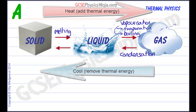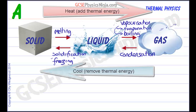We are back to a liquid. And if you continue cooling a liquid, we eventually solidify it — solidification, otherwise known as freezing. These liquid particles get cooler and cooler, move slower and slower, until they form solid bonds and can no longer move around each other; they are held in place and can only vibrate as a solid. So the key words for changes of state are: melting, evaporation, and boiling — all part of vaporization — and going backwards: condensation from gas to liquid, and solidification or freezing from liquid to solid.